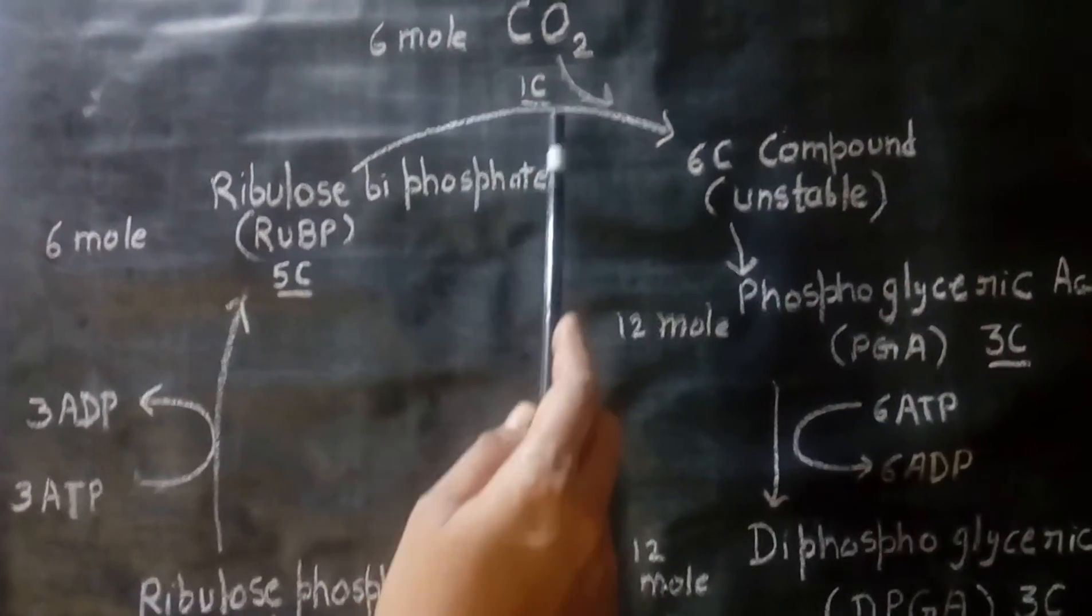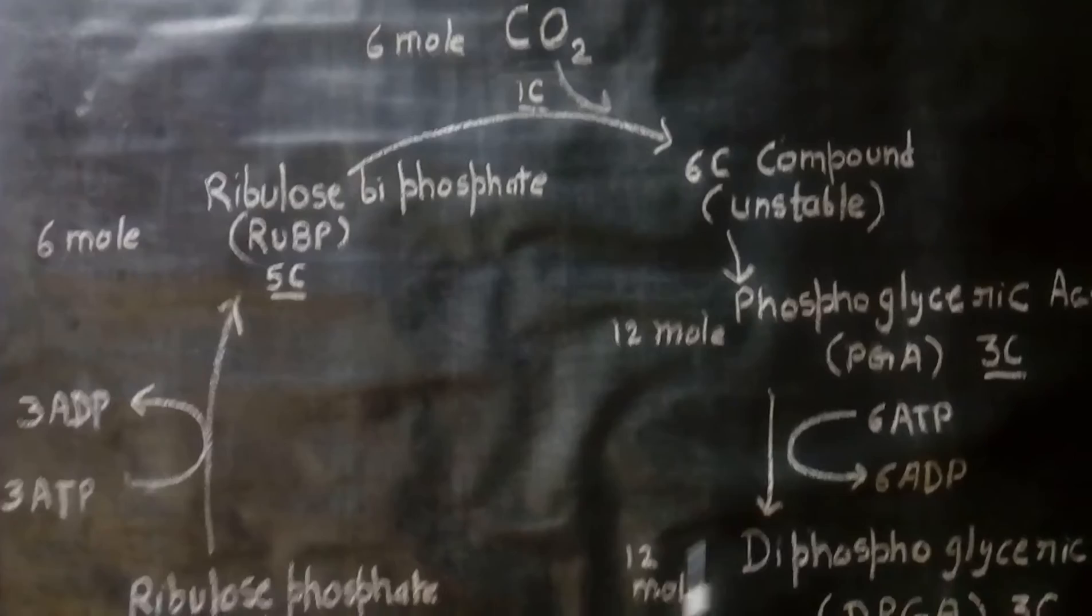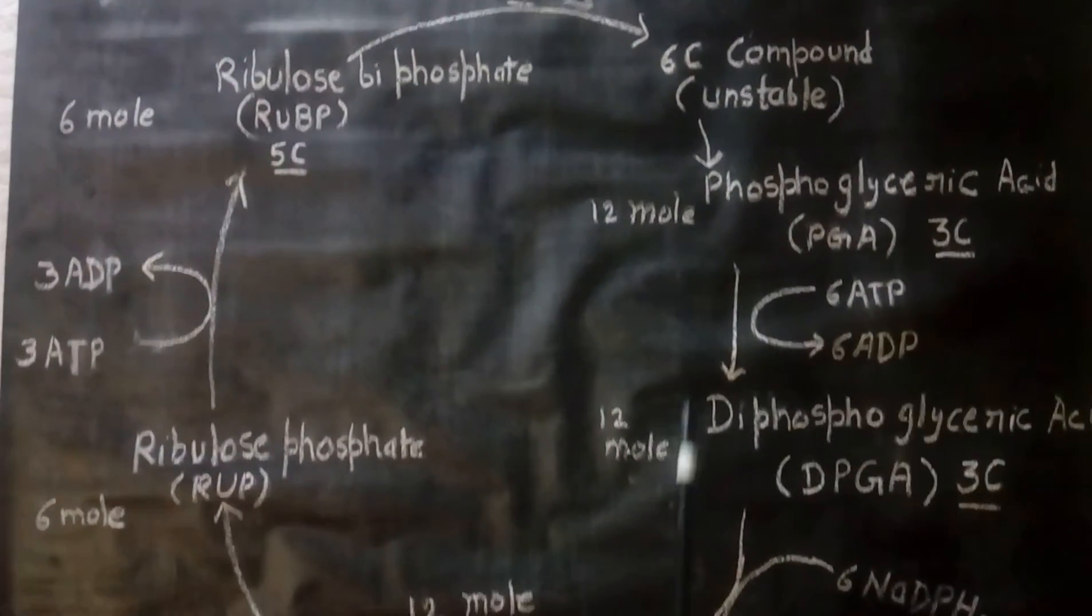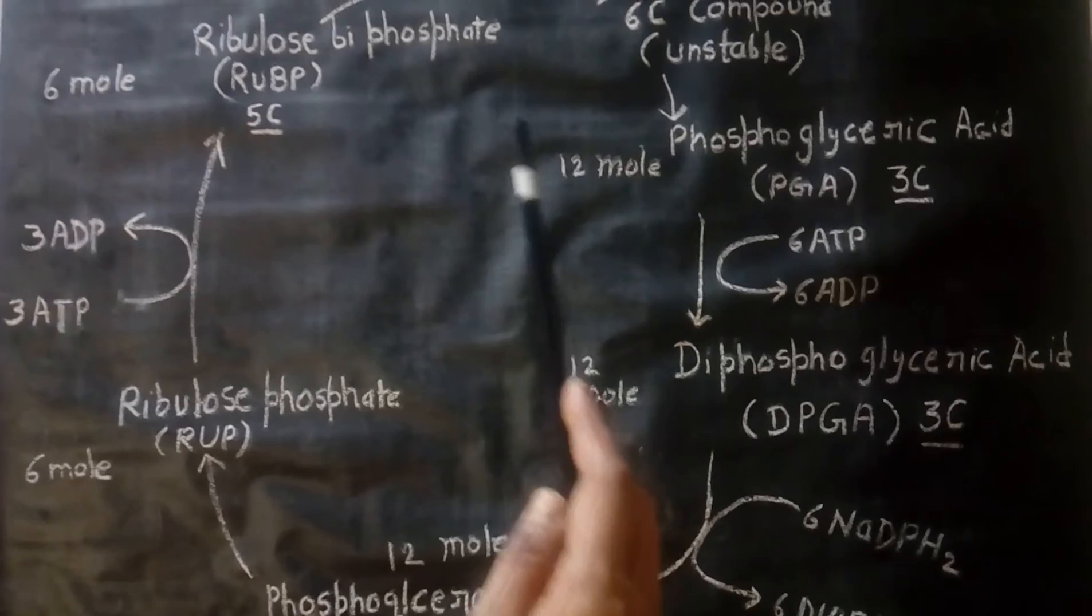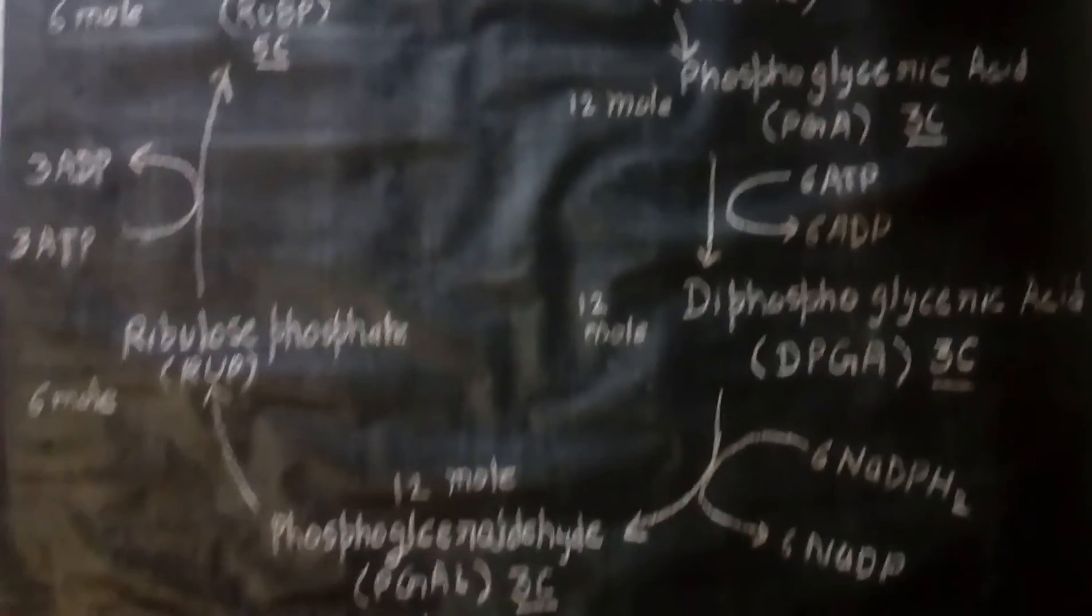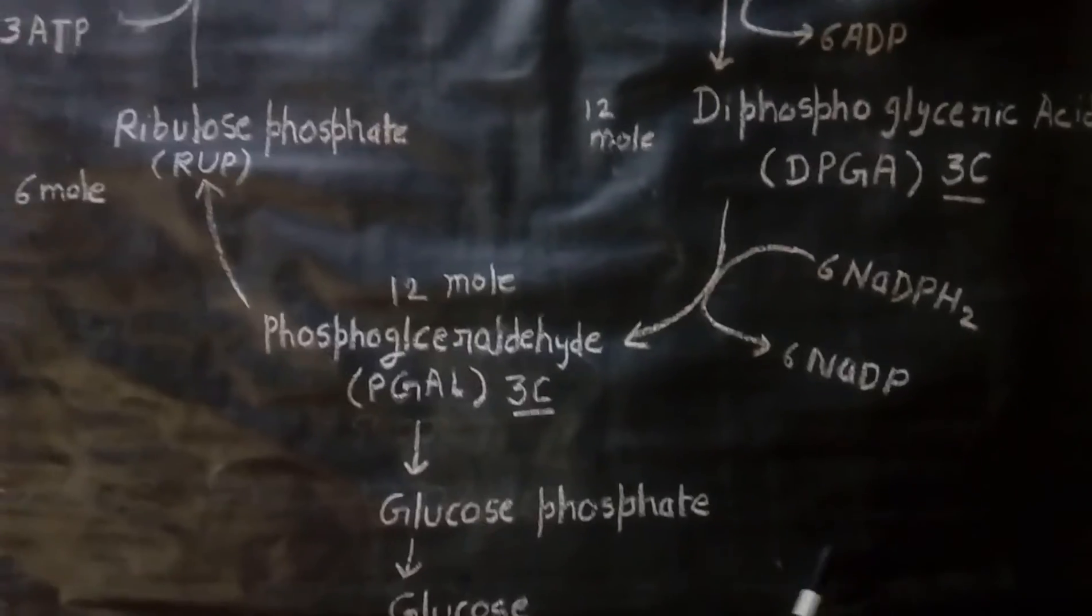This again reacts with CO2 and the cycle goes on. This complete cycle is known as the Calvin cycle. As a result of this, carbon dioxide is fixed in the form of glucose. Thank you for watching this video.